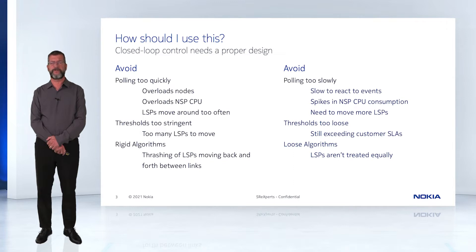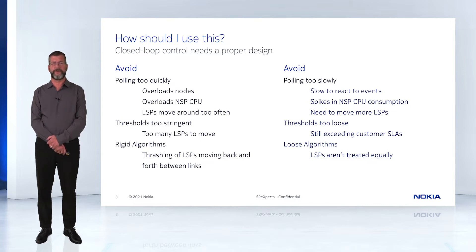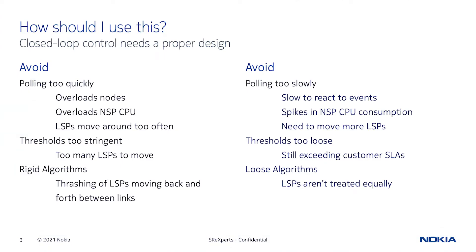Thresholds should also be tuned appropriately. If they are too stringent, there will be too many LSPs to move, trying to achieve this ideal distribution. If they are too loose, customer SLAs may be exceeded. There also shouldn't be strict rules in the algorithms, as these cause thrashing of LSPs as they move back and forth between links. The algorithms also should not be too loose, where the LSPs aren't treated equally.